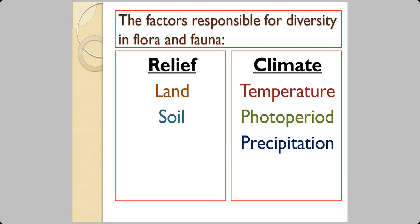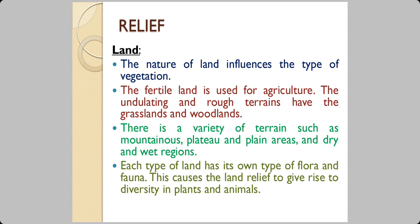The factors responsible for diversity in flora and fauna are relief and climate. When we say relief, we talk about land and soil. When we say climate, we talk about temperature, photo period, and precipitation. The nature of land influences the type of vegetation, and the type of vegetation has a connection to the type of animals living there. There is a variety of terrain — mountainous, plateaus, plains, arid, desert, and wet regions — and every type of land has its own type of flora and fauna, causing diversity.